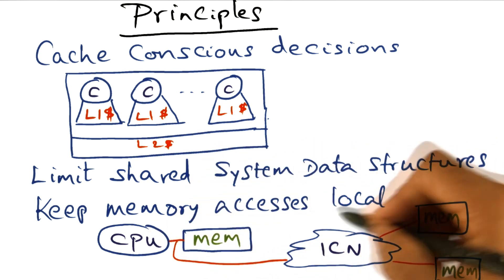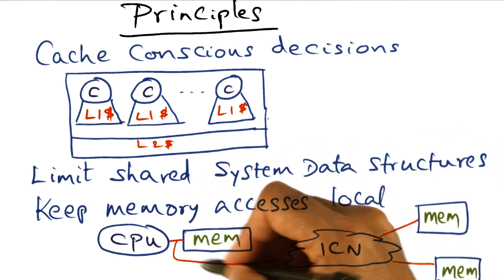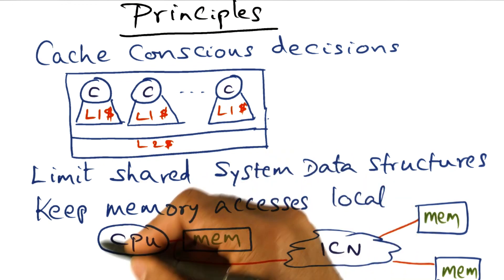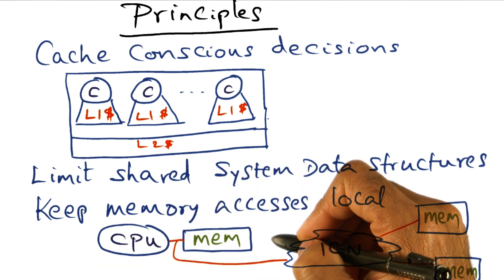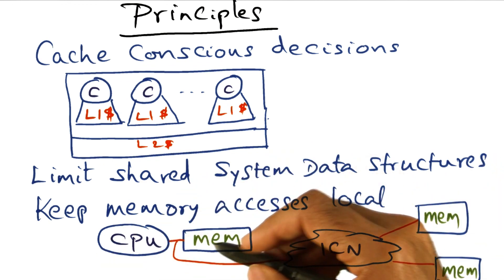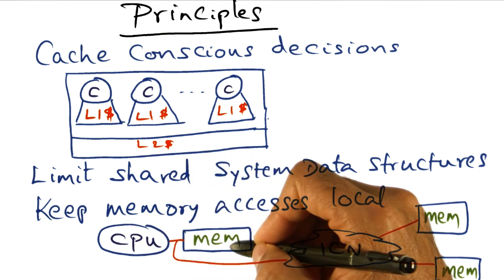And the other thing that you want to do is you want to keep the memory accesses local to every node in the multiprocessor as possible. And basically what that means is you're reducing the distance between the accessing processor and the memory.